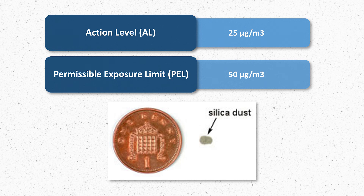The OSHA standard for crystalline silica has two limits. The first limit is called the action level. This means that if employees are exposed to levels of silica dust at 25 micrograms per cubic meter or higher, the employer needs to take action and implement medical surveillance, provide training about silica, and develop an exposure control plan. The second level is called the permissible exposure limit — the highest level employees should ever be exposed to during a full shift. For silica, this limit is 50 micrograms per cubic meter.